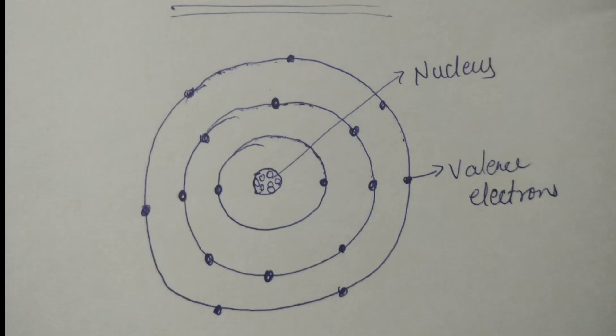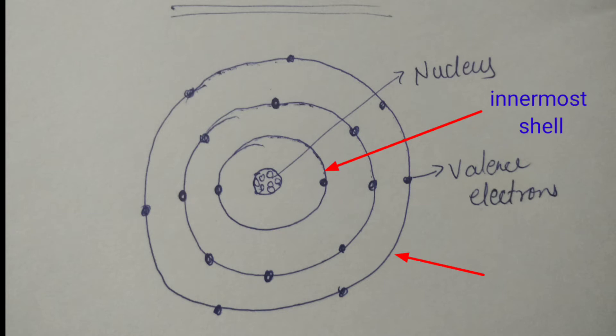Now, what is the valence band? Electrons move in atoms at certain energy levels, but the energy of electrons in the innermost shell is higher than that of outermost shell electrons. The electrons present in the outermost shell are called valence electrons. These valence electrons, containing a series of energy levels, form an energy band called the valence band.